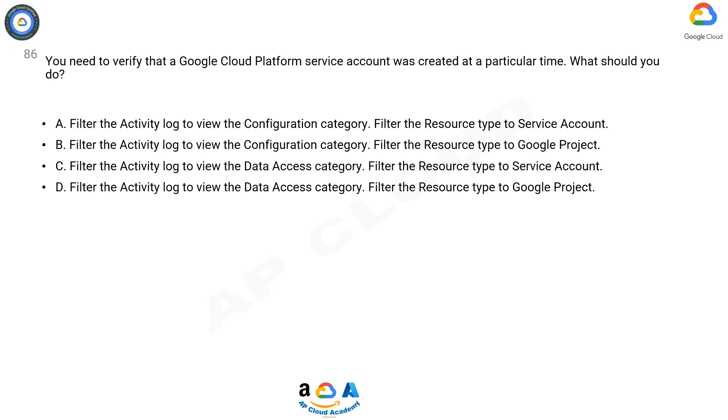Option C: Filter the activity log to view the data access category. Filter the resource type to service account.